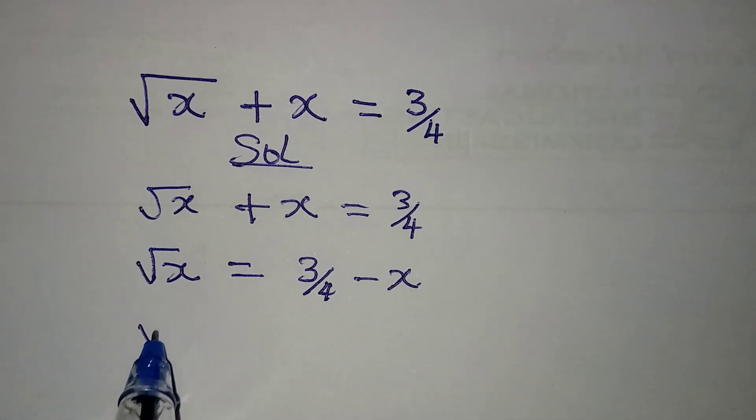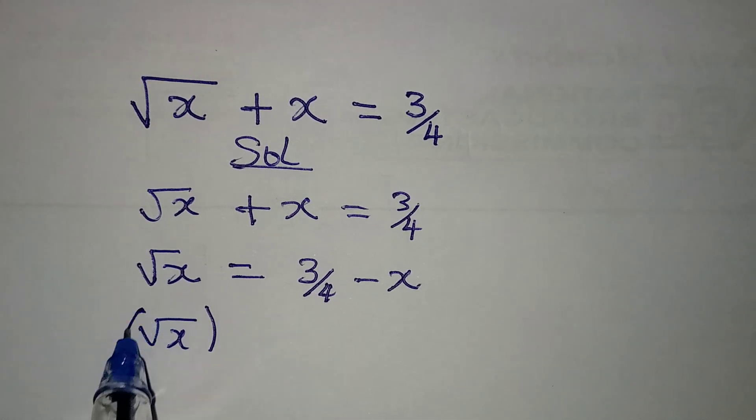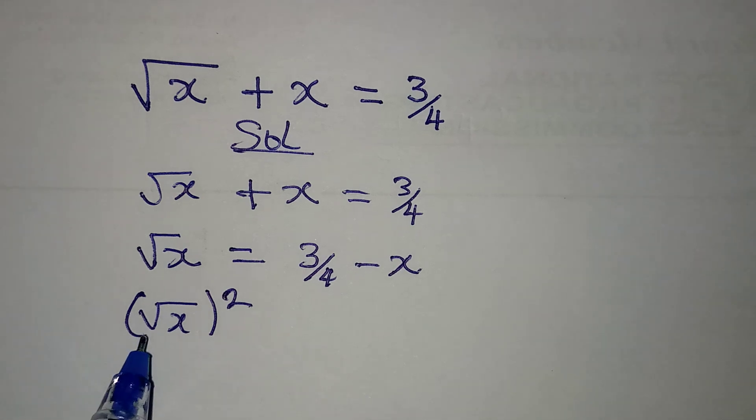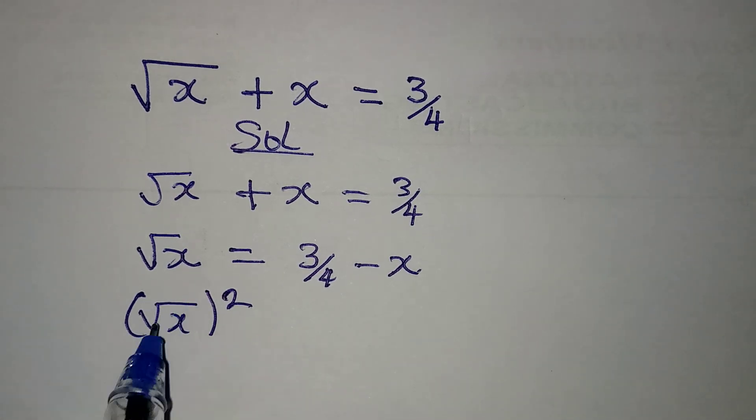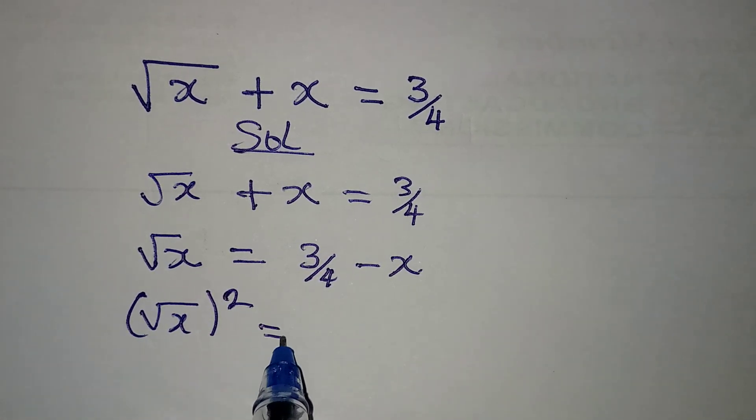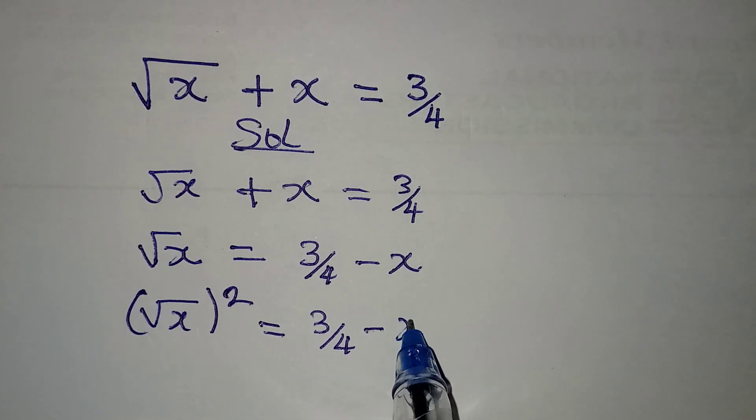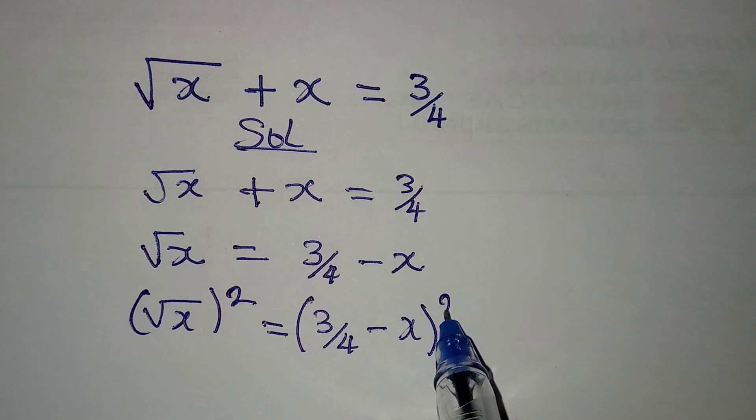The next step is to square both sides. The reason for this is to eliminate root x rather. So we have 3 over 4 minus x, and then this will be squared.